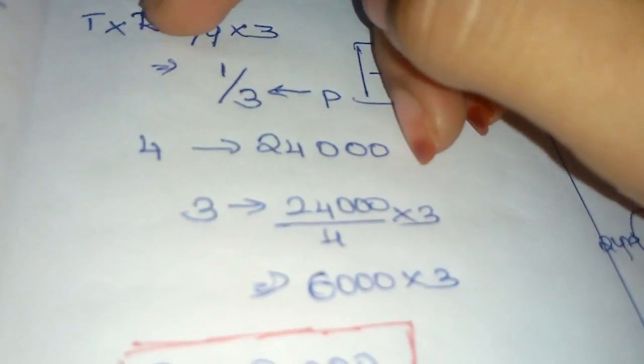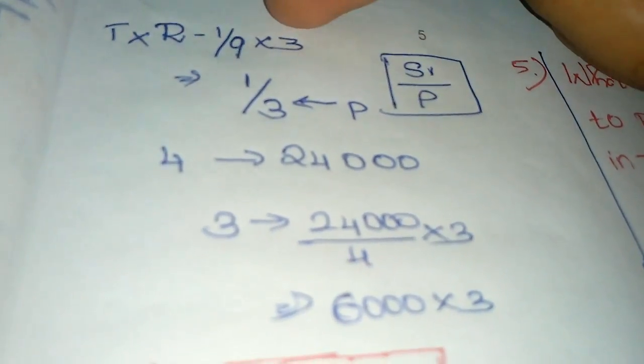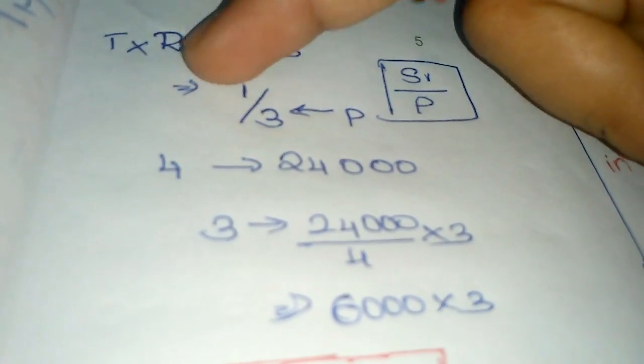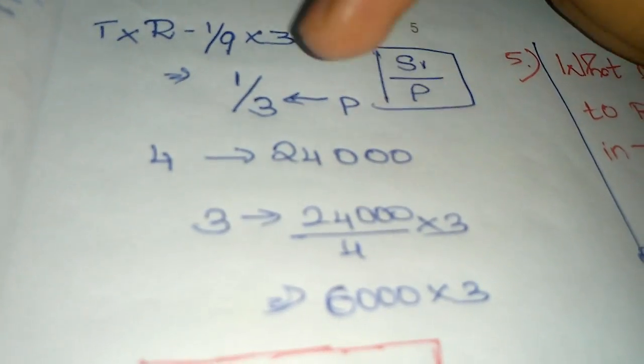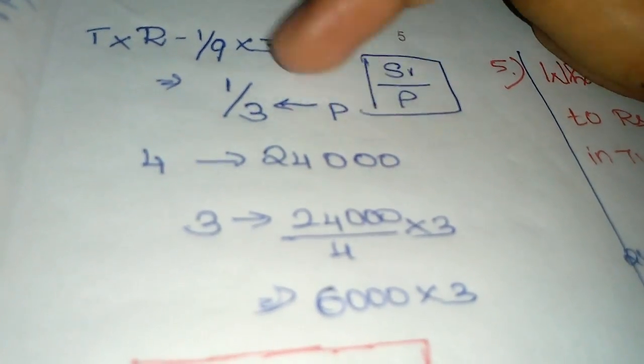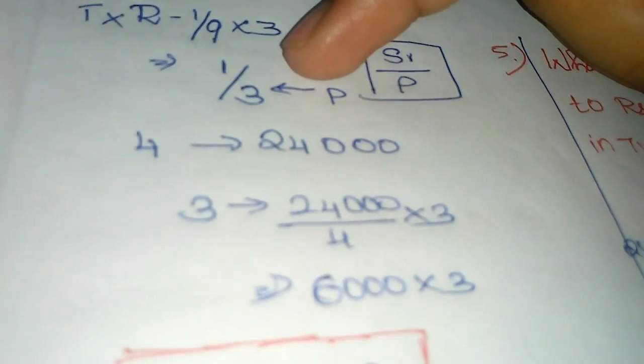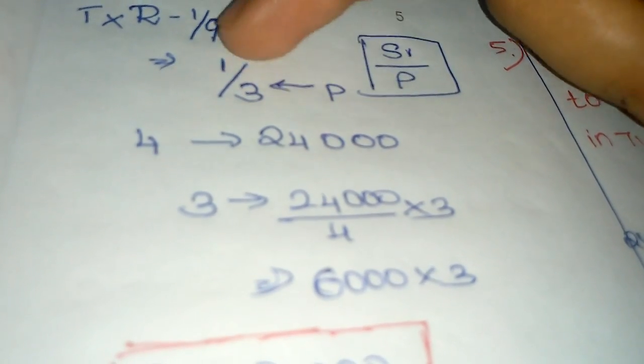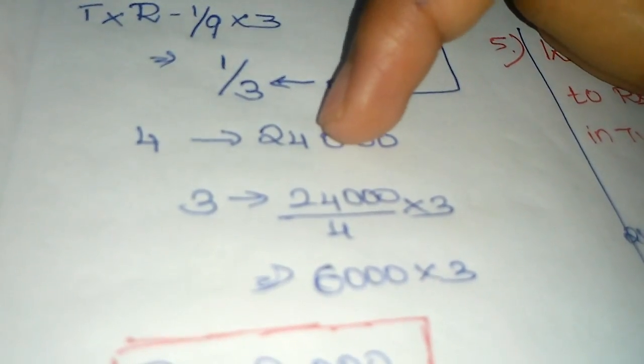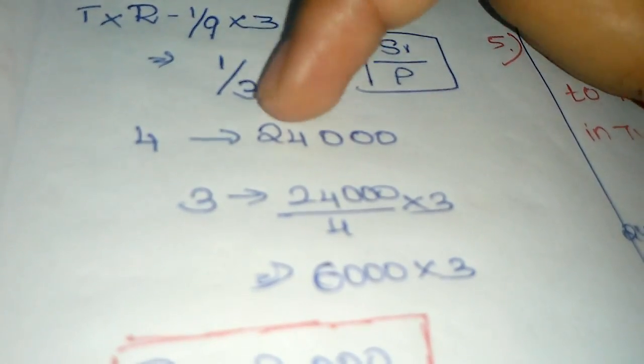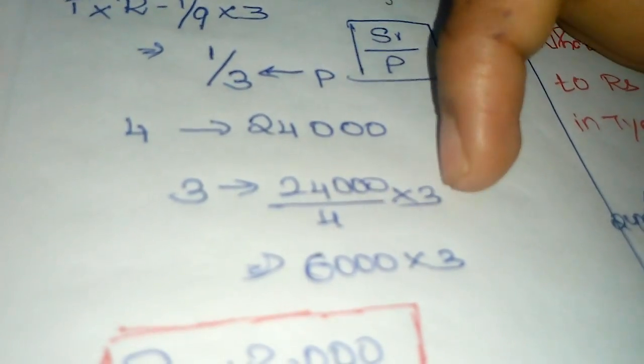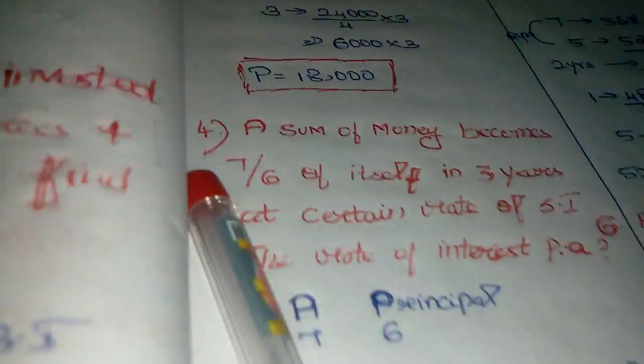Time into rate of interest: 1/9 into 3 - the 3 cancels to give 1/3. One-third always denotes principle, one denotes simple interest. So principle: 3 plus 1 equals 4 parts equal 24,000. Three parts: 24,000 by 4 into 3, that equals principle of 18,000.